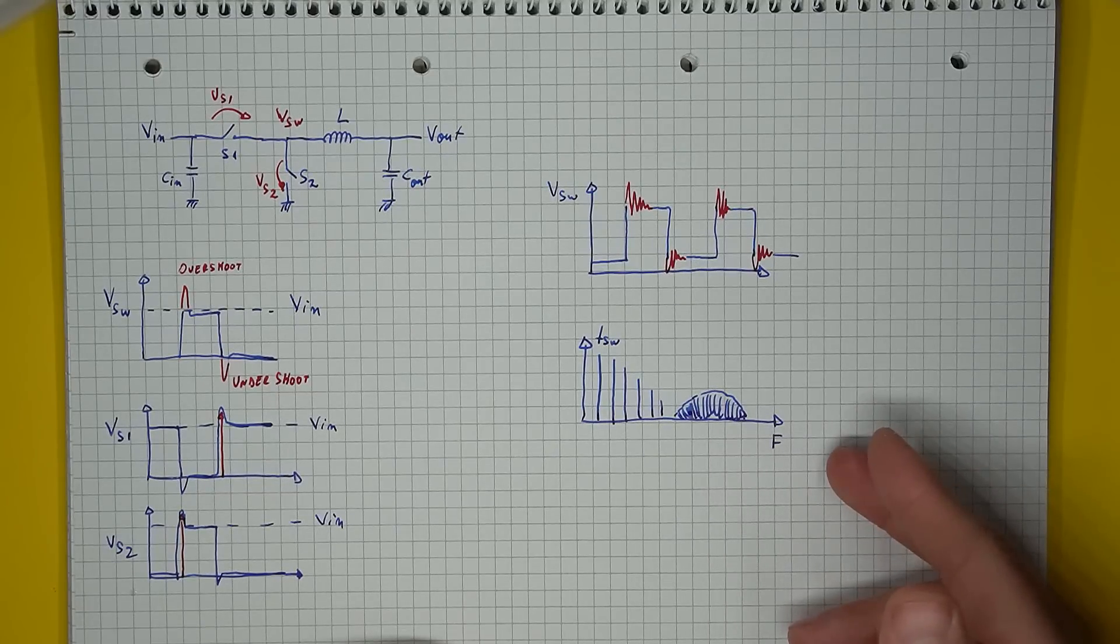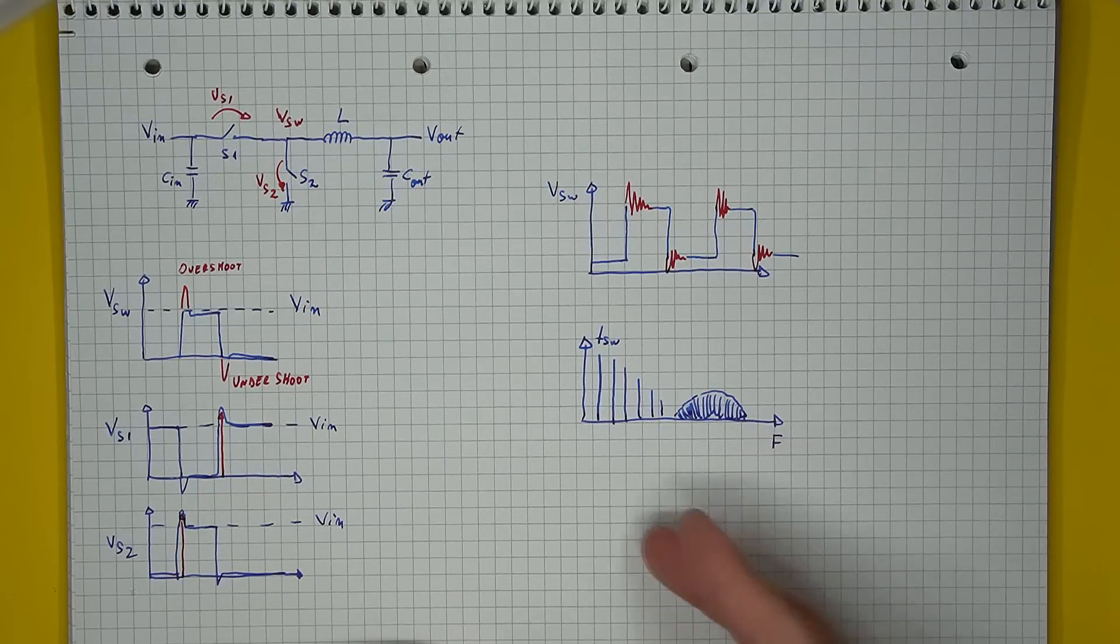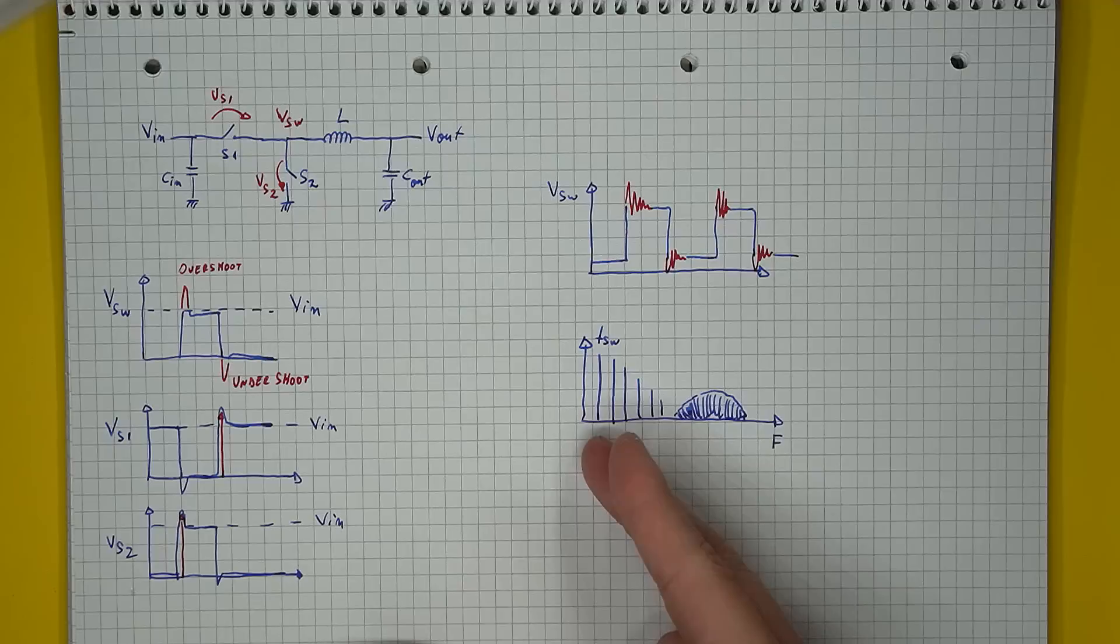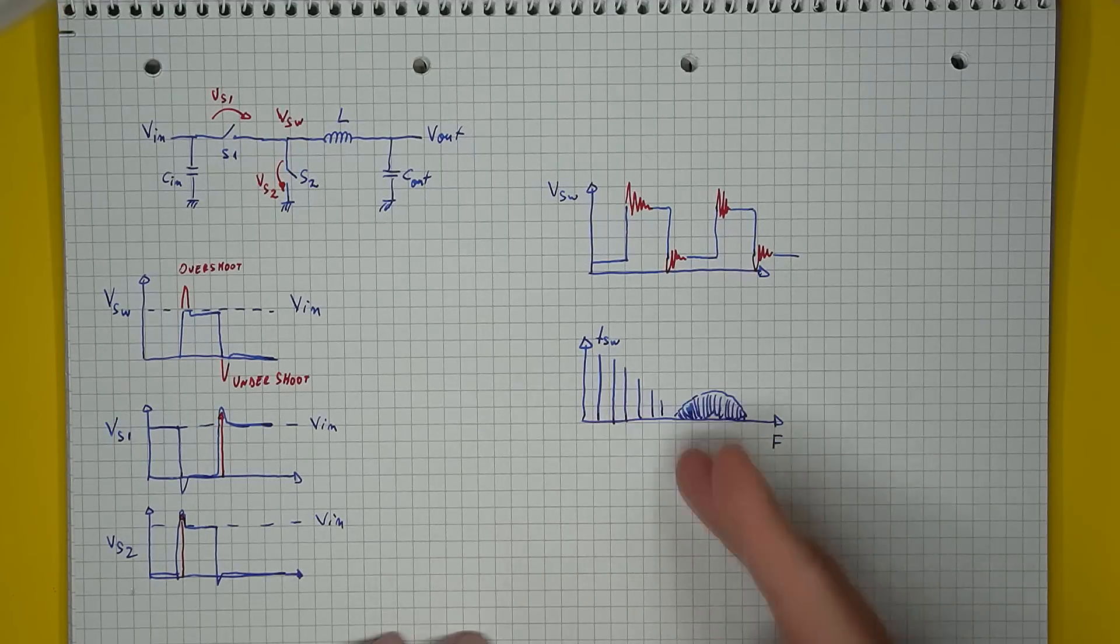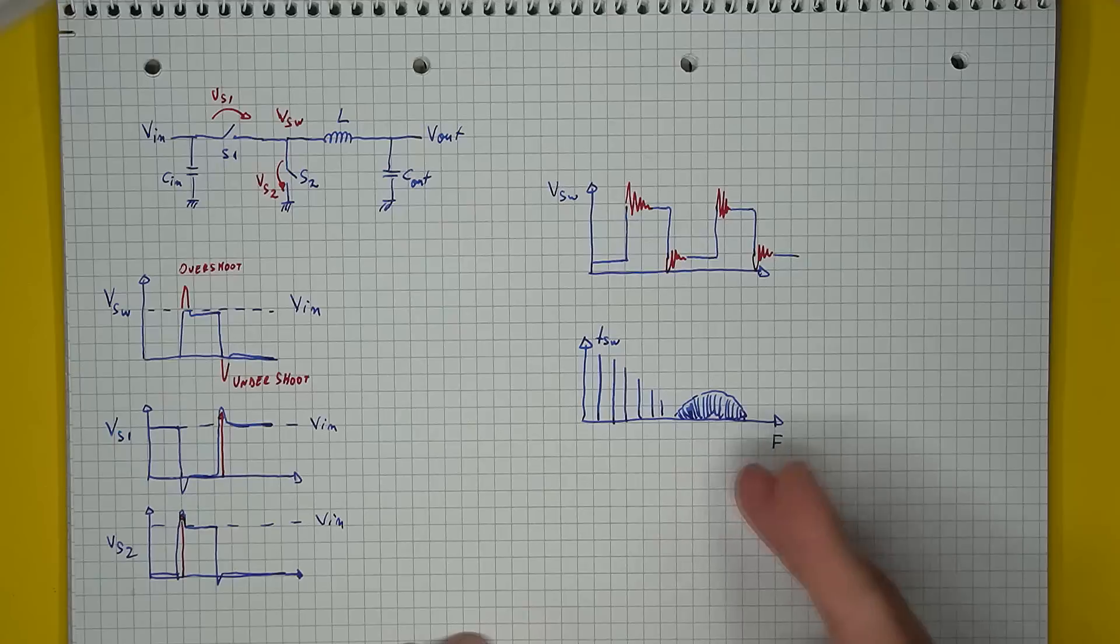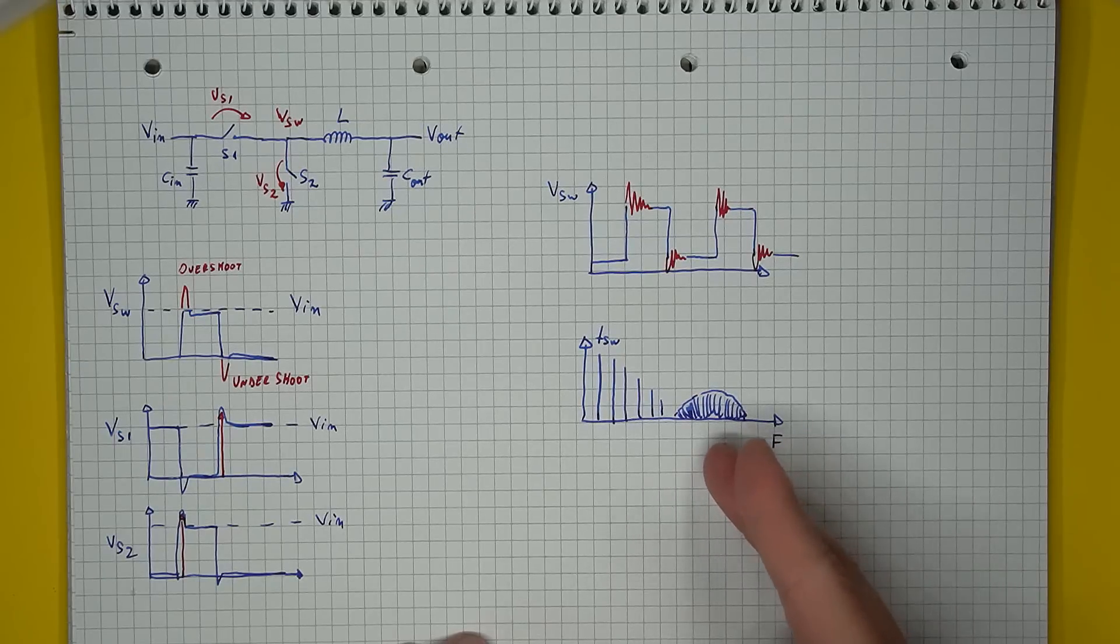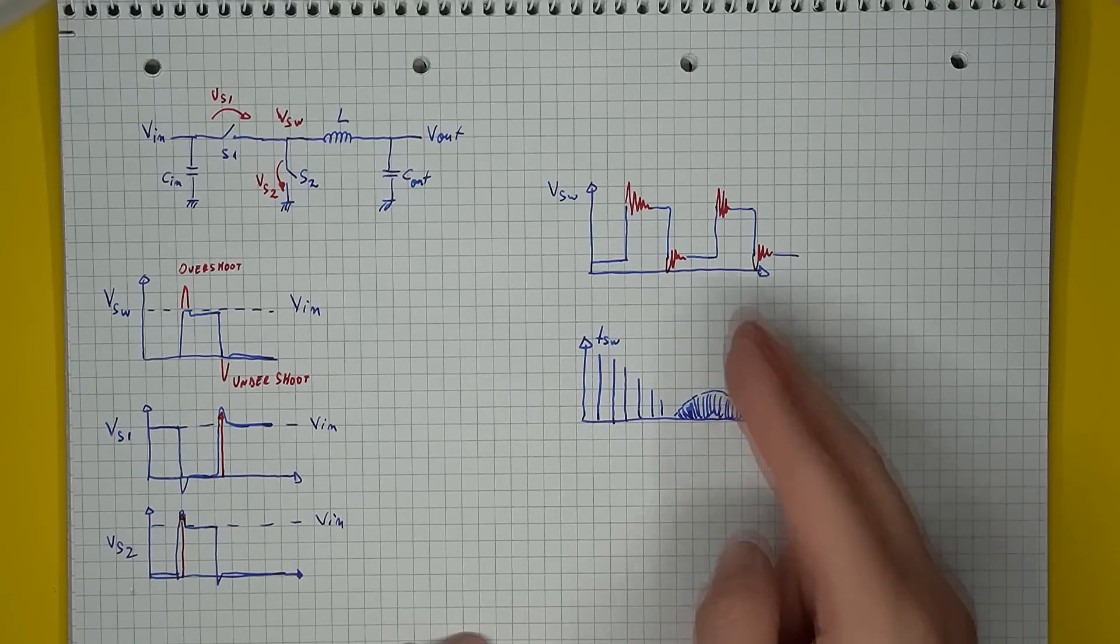So a typical emission spectrum of a supply will contain the fundamental switching frequency, its upper harmonics which slowly die down, and then another noise mountain appears which is related to this ringing.